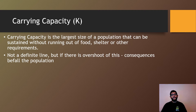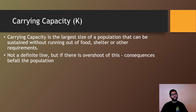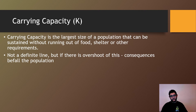One thing to be aware of is that you're going to see a lot of graphs that show carrying capacity as a definite line, but that's not always the case. Populations don't hit carrying capacity and stop. What happens is there tends to be overshoot of carrying capacity, and there tends to be consequences to that. Let's show you what that looks like on the graph.